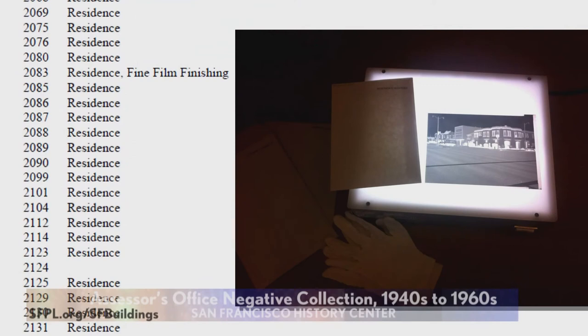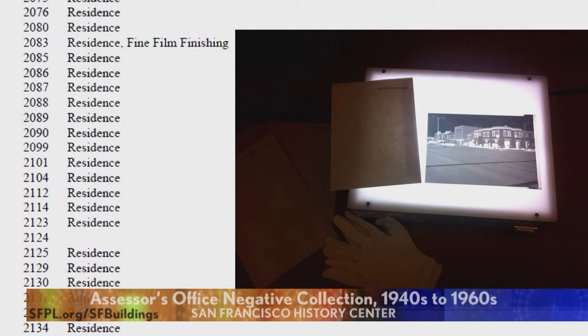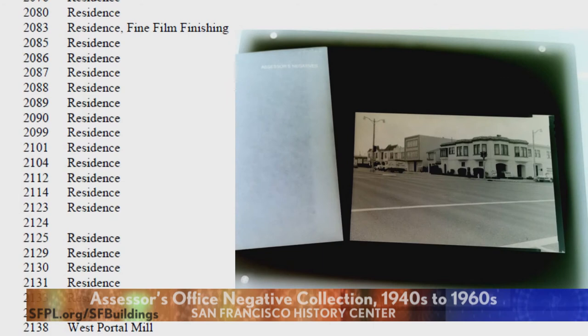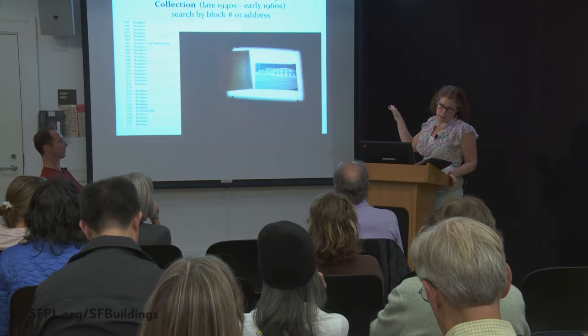We also have the San Francisco Assessor's Office negative collection — about 65,000 negatives from the Assessor's Office, dating from roughly 1946-47 to the early 1960s. They're divided two ways: one by address and one by block number. You get the negative, put on little white gloves, and look at it on the light box. If you have a mobile device or iPad, you can photograph it and switch it to a positive with an app, or you can order prints or a scan to be made.